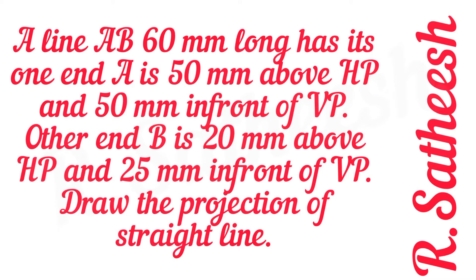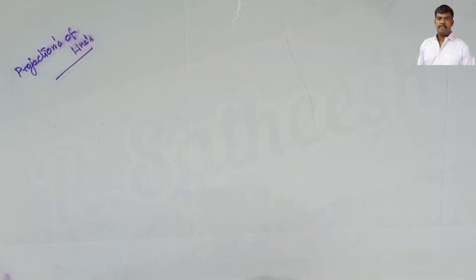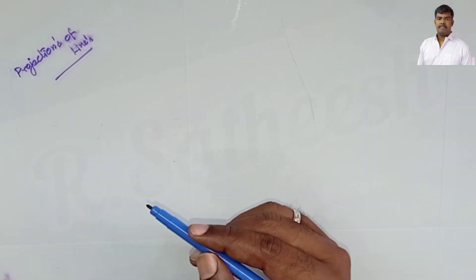Hi students, welcome. Now we are discussing how to solve problems in the projection of lines topic. Our problem is: a line AB, 60mm long, has its one end A 50mm above HP and 50mm in front of VP. The other end B is 20mm above HP and 25mm in front of VP. Draw the projection of the straight line.